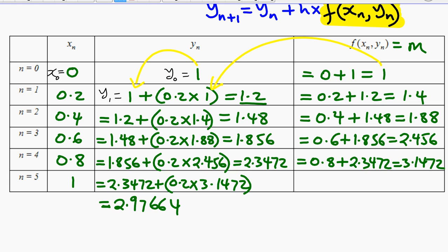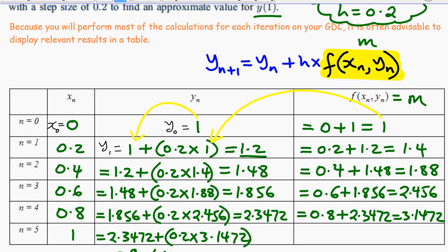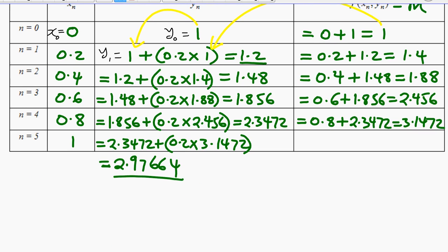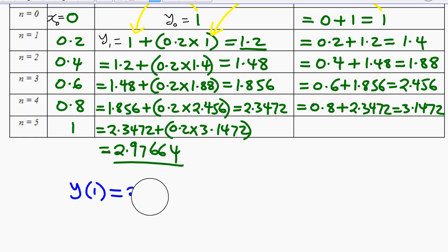So this is what you end up with — an approximate value of y at x = 1. Basically, y(1) ≈ 2.976, or to three significant figures, 2.98.